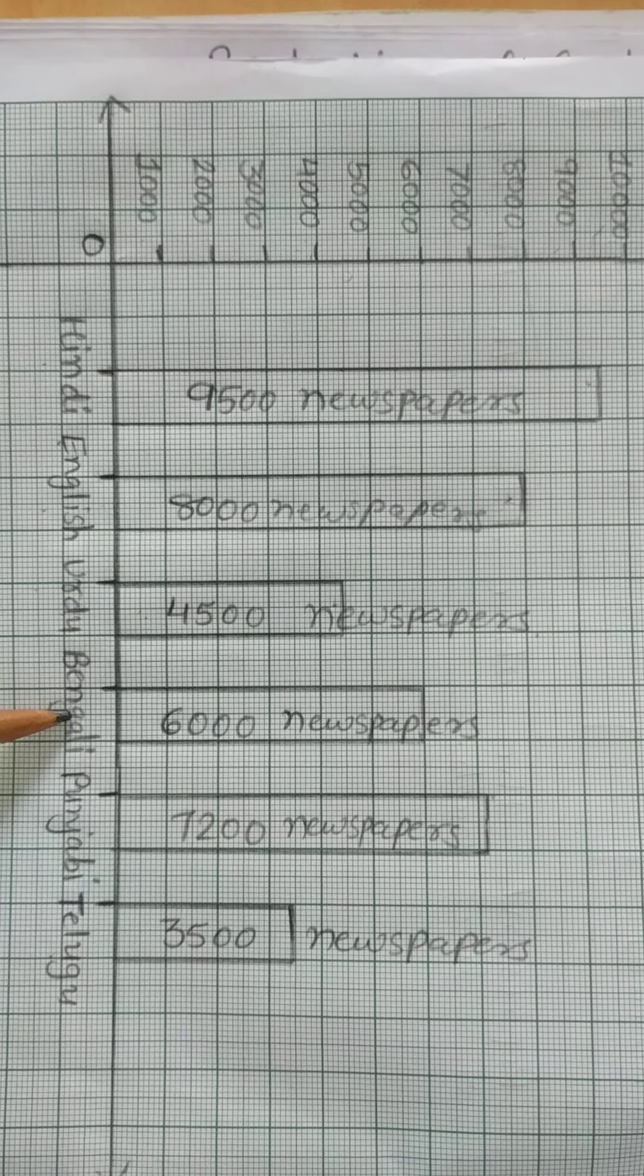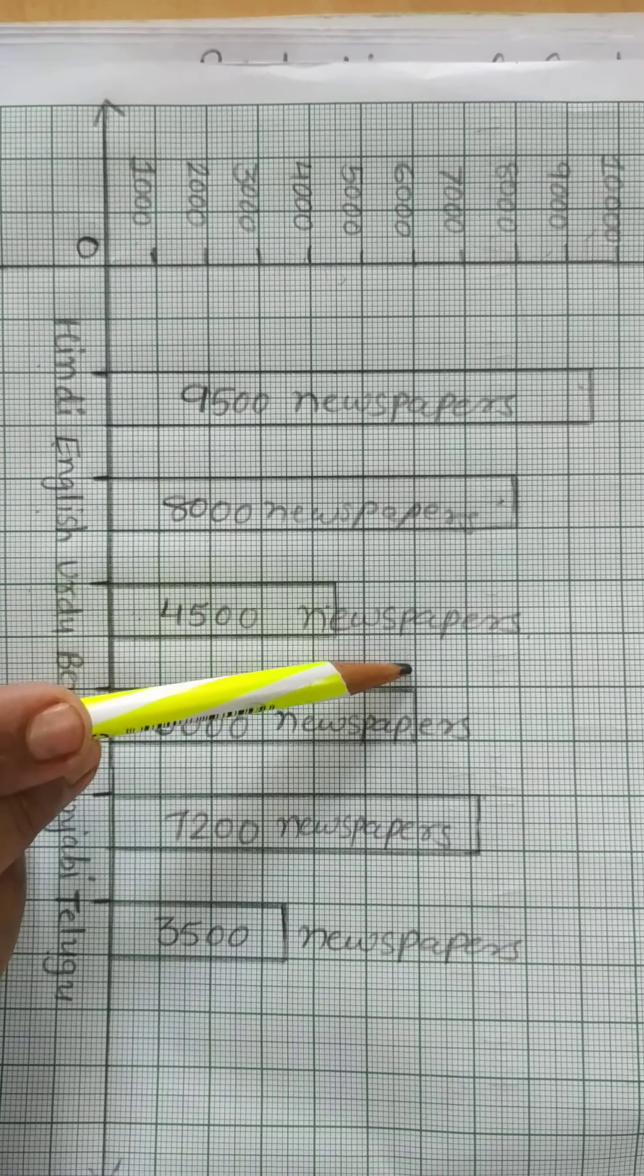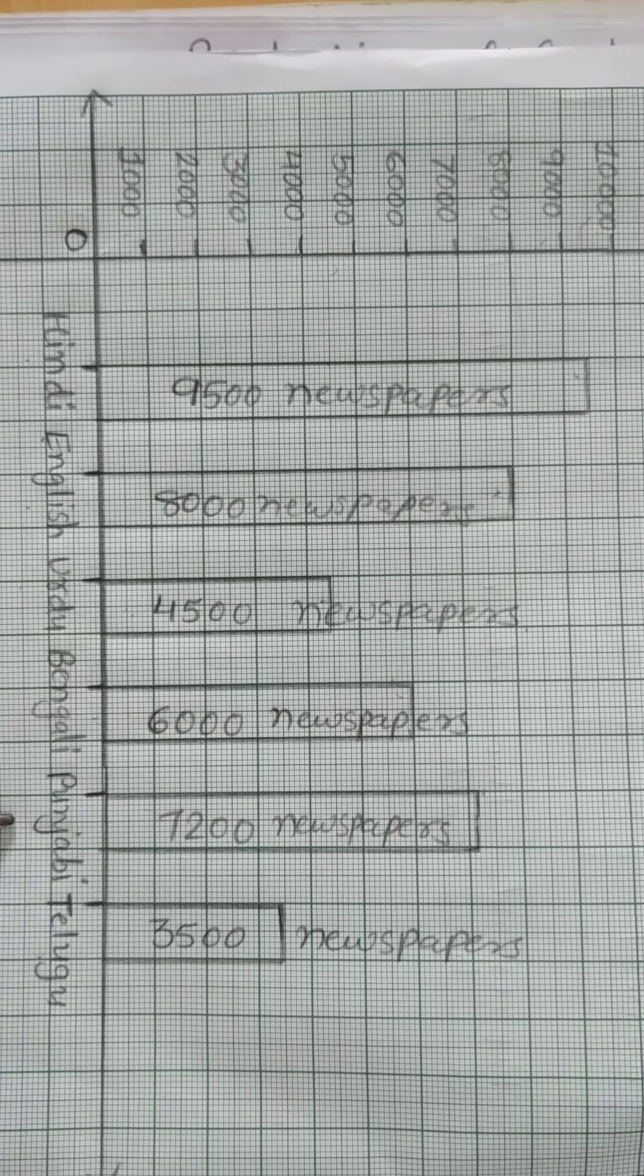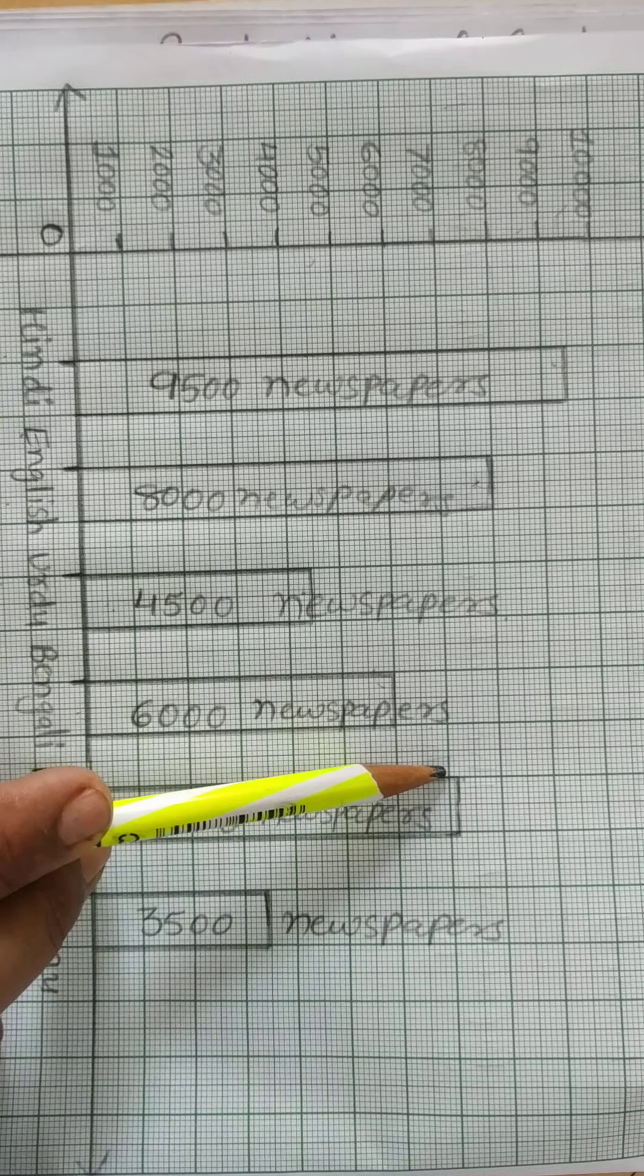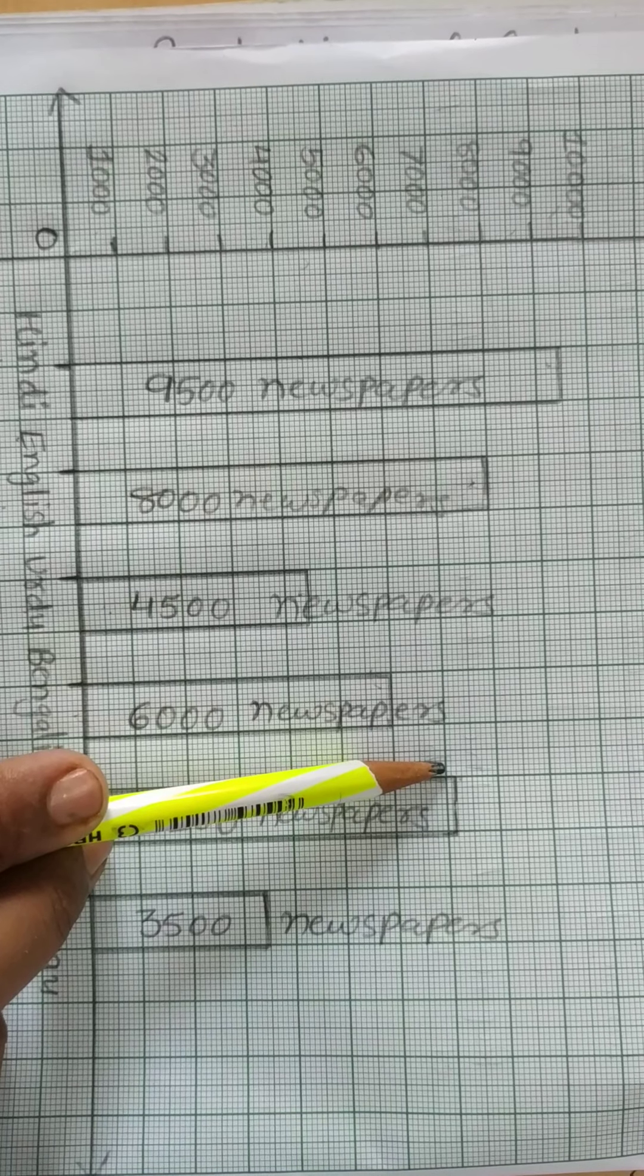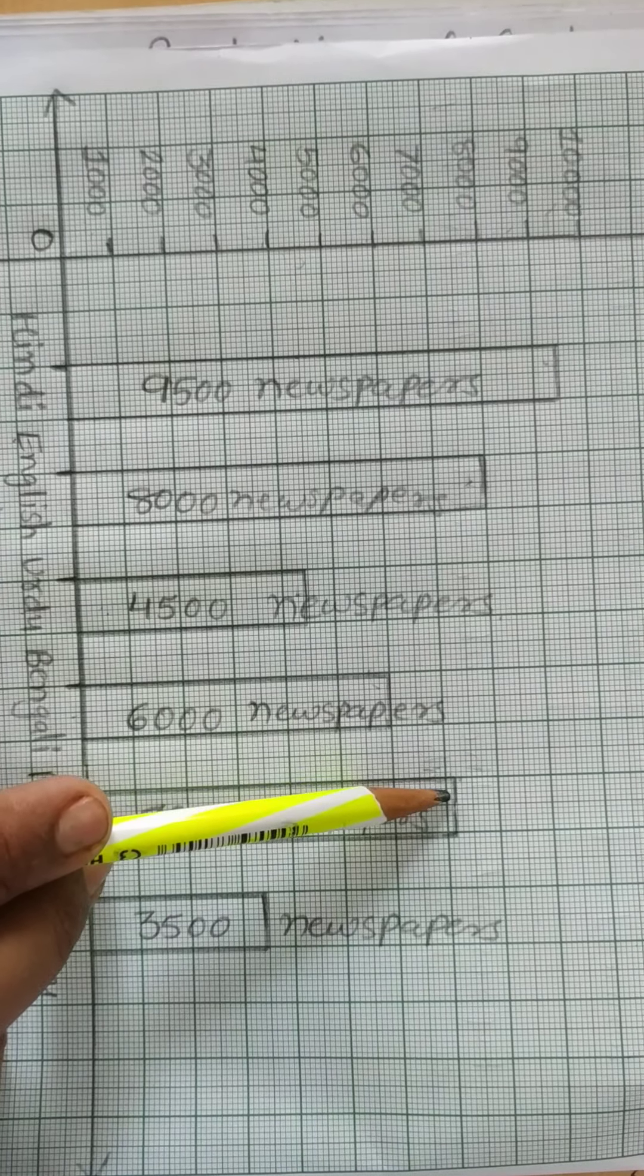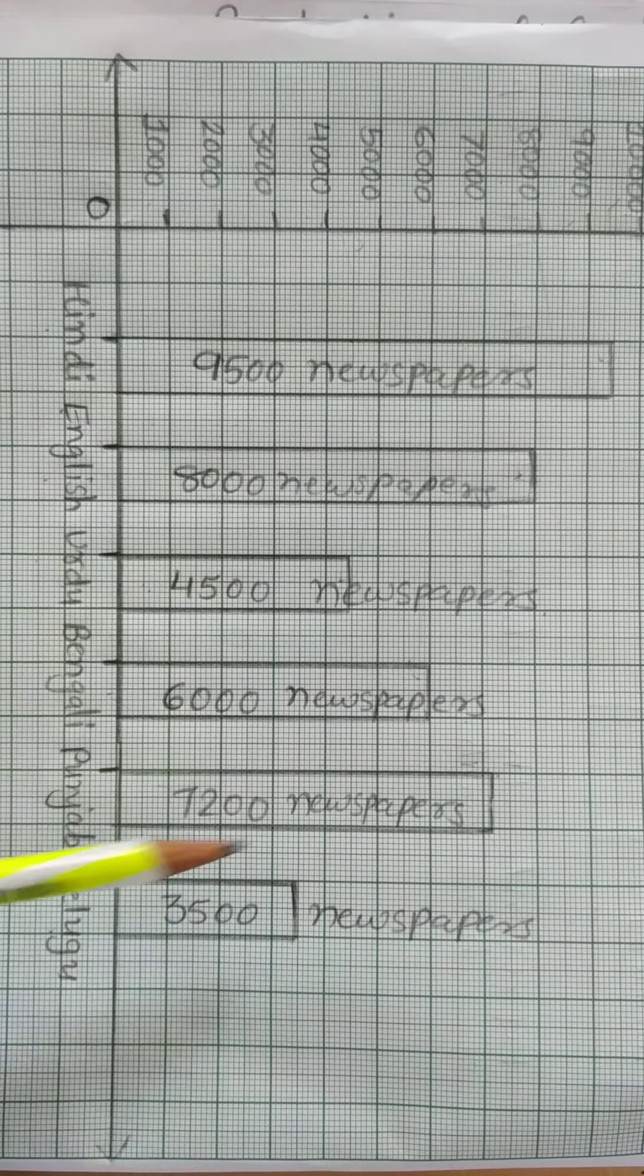For Bengali 6,000, so start from zero and 6,000 is here. I make the bar up to here. Then Punjabi is 7,200. So 7,000 is here, and from 7,000 to 8,000 there are 10 lines, so each is 100. So I take two boxes, one and two, so 7,200. For Punjabi 7,200 newspapers.